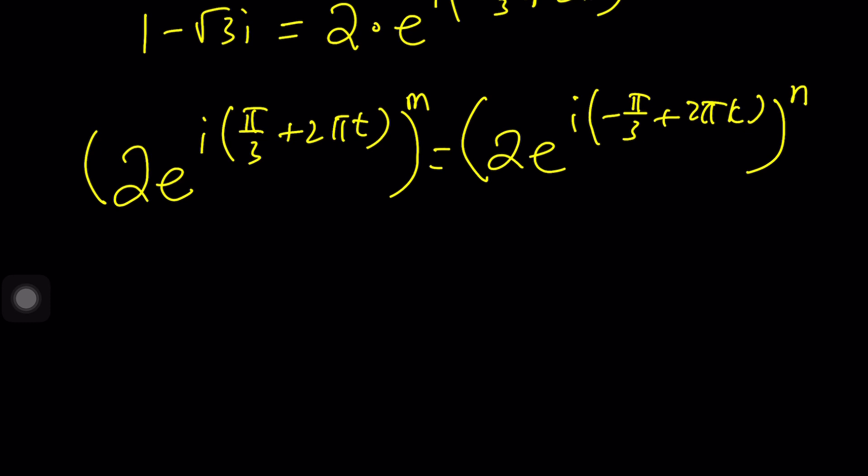But we're going to get something like 2^m and then times e to the power, and in this case it's just multiply by that. So i·m·(π/3 + 2πt) and this one is going to be 2^n and then e^(i·n(-π/3 + 2πk)).